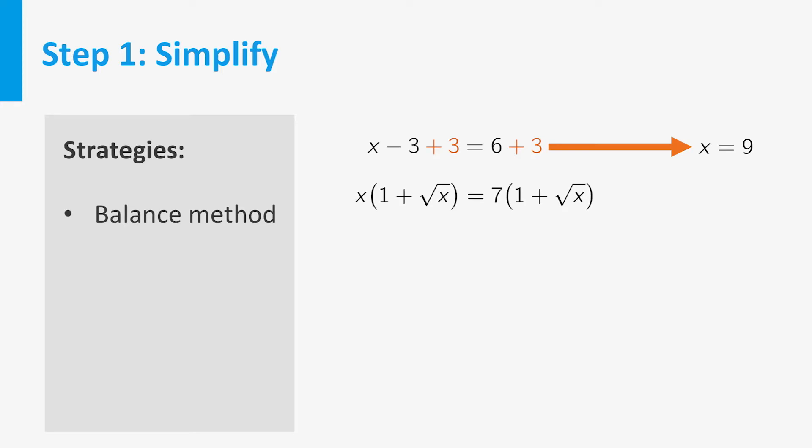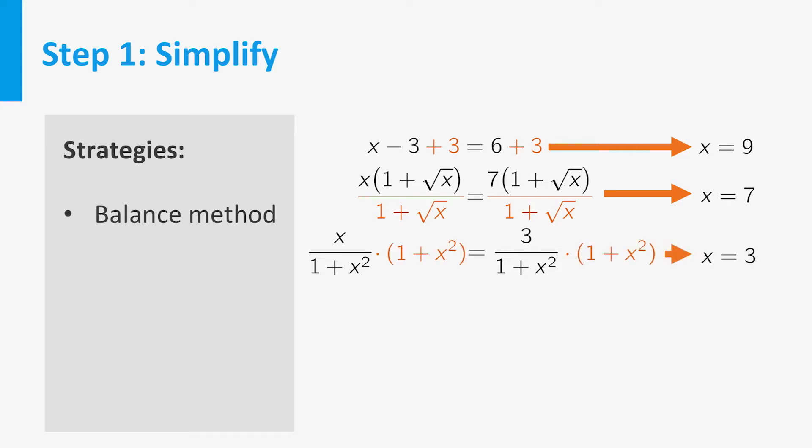Divide by a common factor. In the example we can divide by 1 plus square root of x. Multiply to get rid of denominators. Here we can multiply by 1 plus x squared.